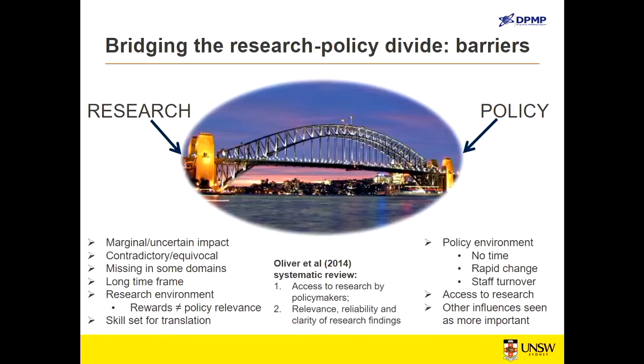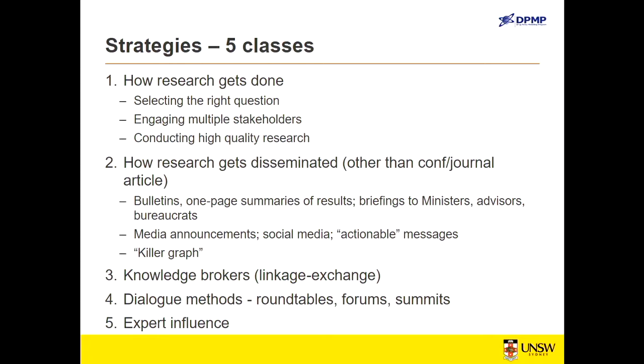Oliver and colleagues did a systematic review in 2014 and identified two key barriers: access to research by policy makers on the policy side, and on our side the relevance, reliability and clarity of our research findings. I'm going to talk about five classes of strategies: doing the research, disseminating the research, knowledge brokers, dialogue methods, and expert influence.